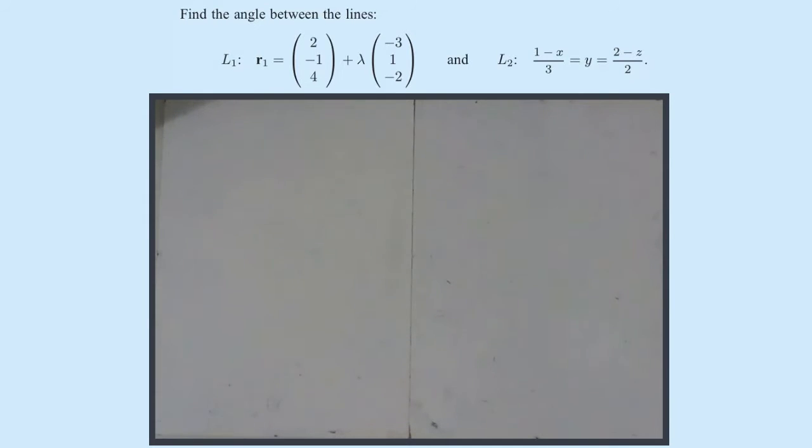Find the angle between the lines. L1, which is expressed as a vector equation, R equals (2, -1, 4) plus lambda(-3, 1, -2). And L2 is expressed in Cartesian manner: (1 - x)/3 equals y equals (2 - z)/-2. So we need to look at the two direction vectors to find the angle between the lines.